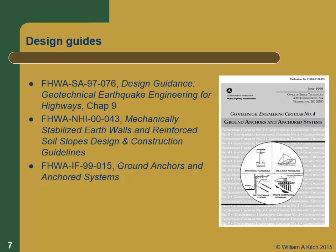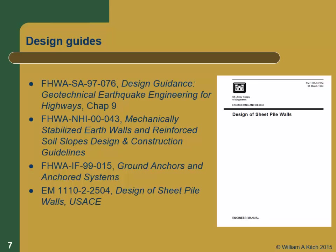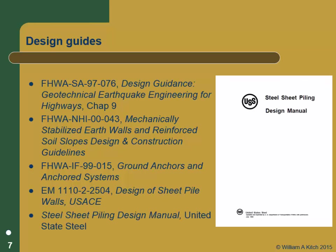When we talk about anchor systems and ground anchors, we'll be using the 1999 FHWA ground anchors design document. For sheet pile walls, there are two really good design guides — both relatively old but quite good and thorough. One is from the Corps of Engineers, and the second is a really old one from U.S. Steel, back when Bethlehem, Pennsylvania was producing lots of steel, but it's a really good design manual. All that information is on Blackboard — you should be able to download it. You may just want to download that whole library, because there's probably nothing in it that we're not going to use.